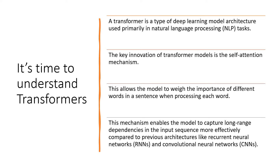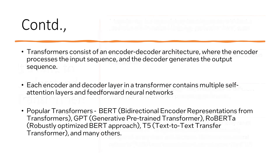In the future, transformers are going to gain more attention, so it is good to learn this. Transformers basically consist of an encoder and decoder — the encoder processes the input sequence and the decoder generates the output sequence. Each encoder and decoder layer consists of multiple self-attention layers and feed-forward neural networks. There are multiple transformers already famous in the market: BERT, GPT, RoBERTa, T5 — all these transformers are really famous and you can learn more about them.